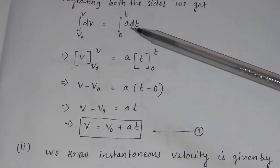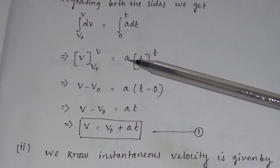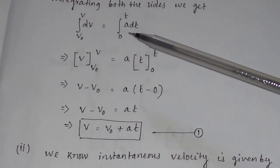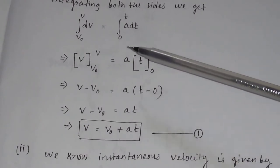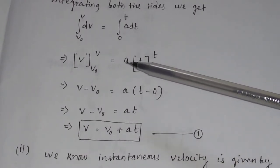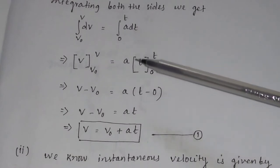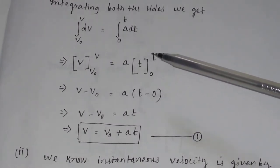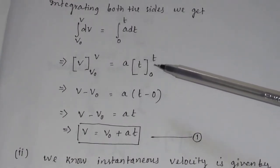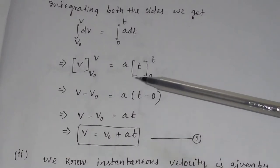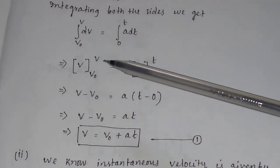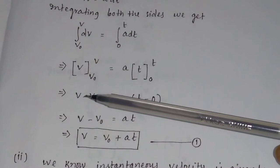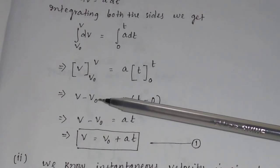Similarly, for the integration of A dt, you take A outside as a constant because acceleration is uniform. Integration of dt is t, evaluated from 0 to t. So t is the upper integral and 0 is the lower integral. You first substitute the upper integral, then minus the lower integral.